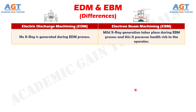Number 6: No x-ray is generated during the Electric Discharge Machining process, whereas mild x-ray generation takes place during the Electron Beam Machining process, and this possesses a health risk to the operator.